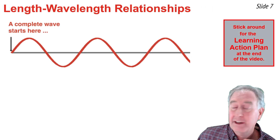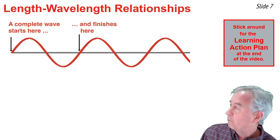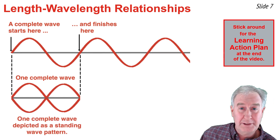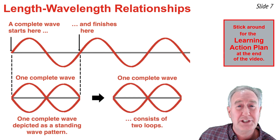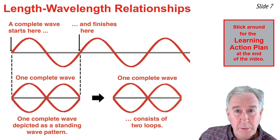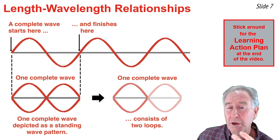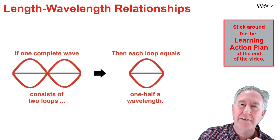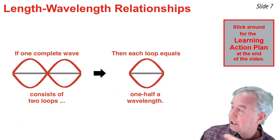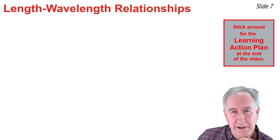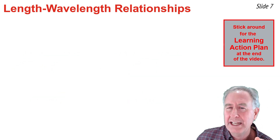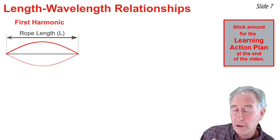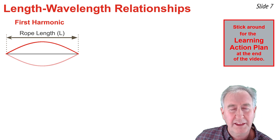Now, looking at a wave pattern, if I start at the beginning and count over, I've counted one complete wave. One complete wave contains two loops, where a loop is one of those flashing sections. So that means a single loop is equal to half of a wavelength. I can use this idea of a loop to generate an equation that relates the length of a rope to the wavelength of the wave pattern.